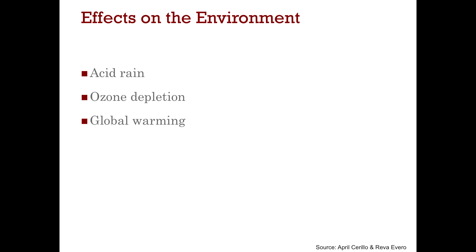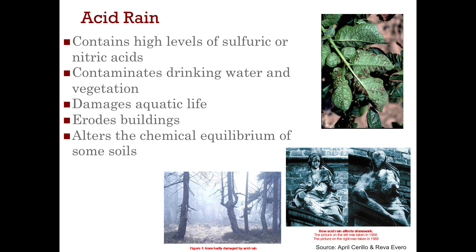Some effects of air pollution on the environment include acid rain, ozone depletion, and global warming, which was discussed in the previous lecture. Acid rain is basically rain that contains high levels of sulfuric or nitric acid. Those high levels can contaminate drinking water, and because that water feeds into our crops, it can be brought up into plants and contaminate vegetation. It damages aquatic life, can erode buildings and statues, and can alter the chemical equilibrium of soils, impacting what can grow in those areas and what we can eat.